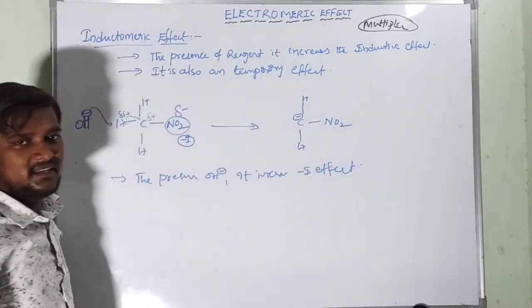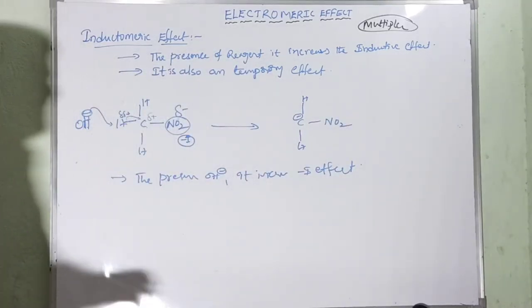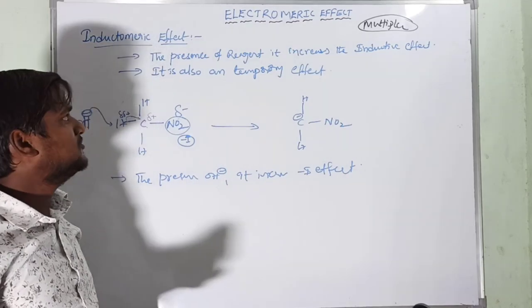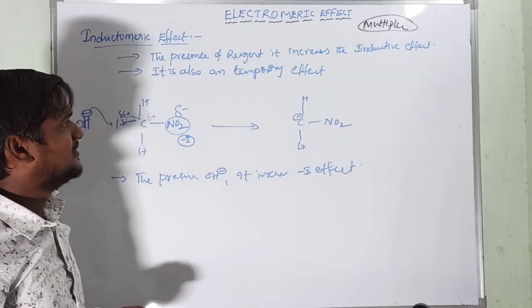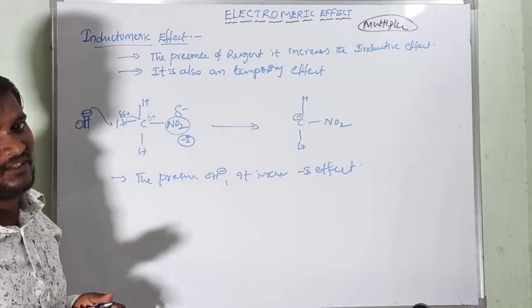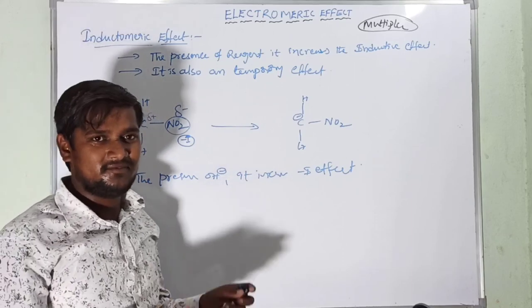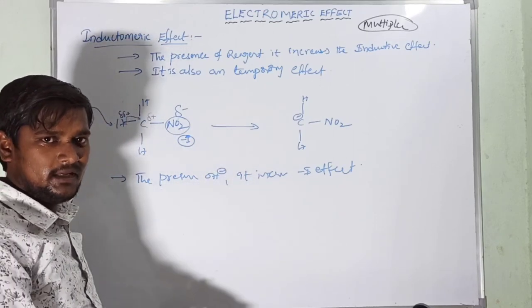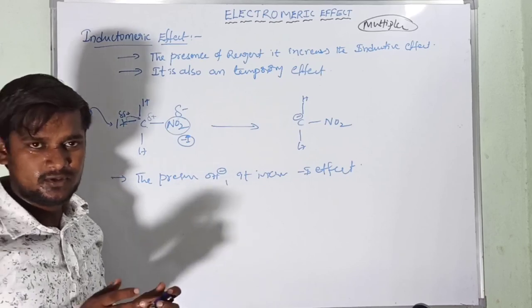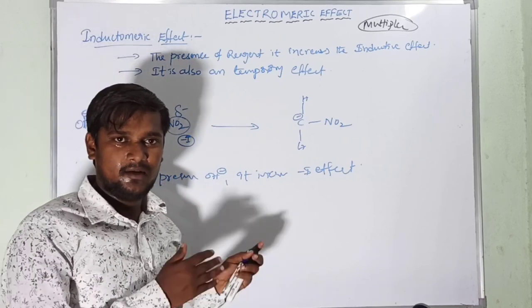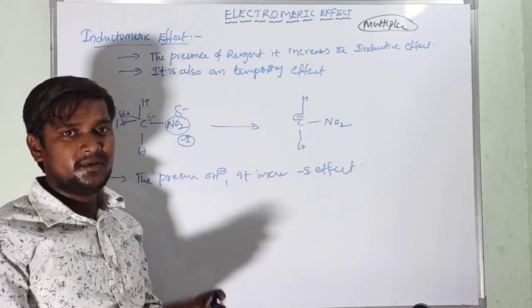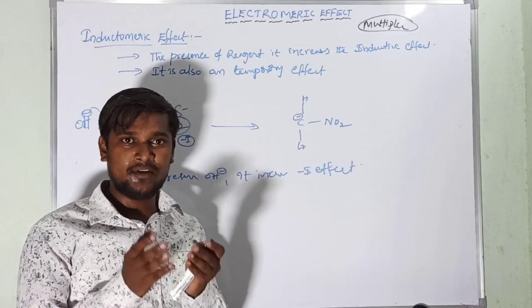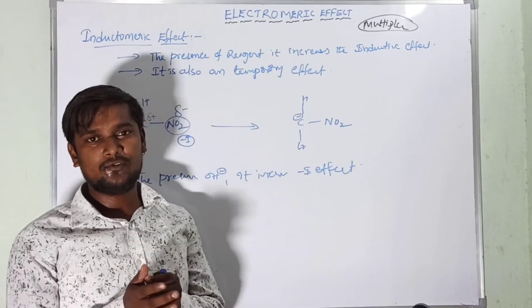The presence of OH⁻ increases the −I effect — that is the inductomeric effect. It is a very simple effect. Both the electromeric effect and inductomeric effect are temporary effects. That's all for this video — I hope it is helpful. Thank you for watching.